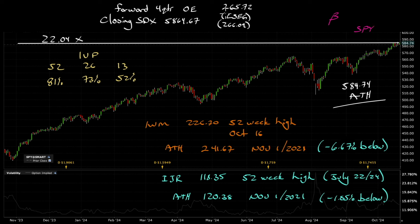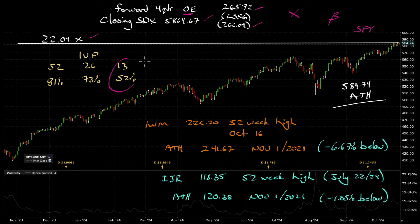On beta: SPY forward four-quarter operating earnings at 265.72, down slightly week over week. Closing SPX at 5864, putting it at 22.04 times forward earnings. Volatility just dropping at an all-time high. Earnings are coming down ever so slightly, the market is going up, the multiple is increasing, and volatility is disappearing — all at all-time highs in front of an election and a Fed meeting.